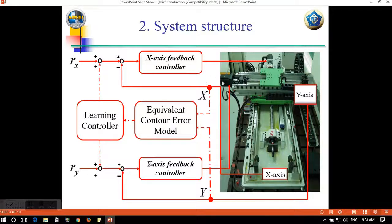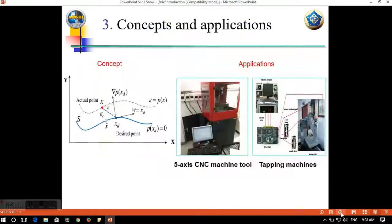So after finishing the machining, we get the data and then we put it into the equivalent contour error model and the learning controller, and modify the input command for the next machining cycle. This is the structure.